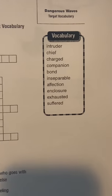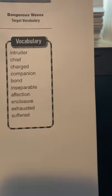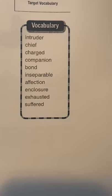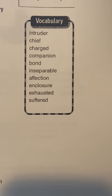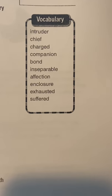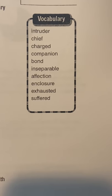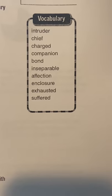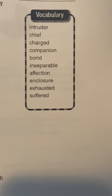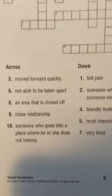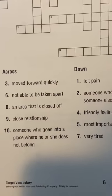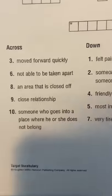Vocabulary words: they are intruder, chief, charged, companion, bound, inseparable, affection, enclosed, exhausted, and suffered. You don't have your glossary, so you can look these up online. I did read them to you, so you can go back and refer to the video.